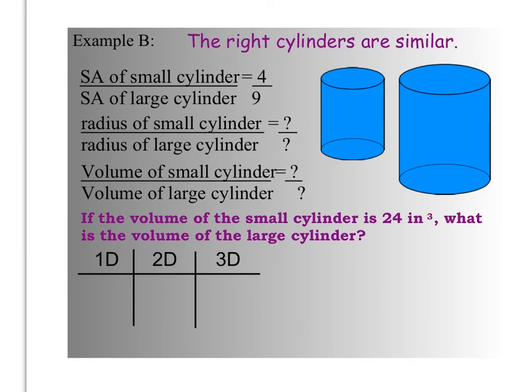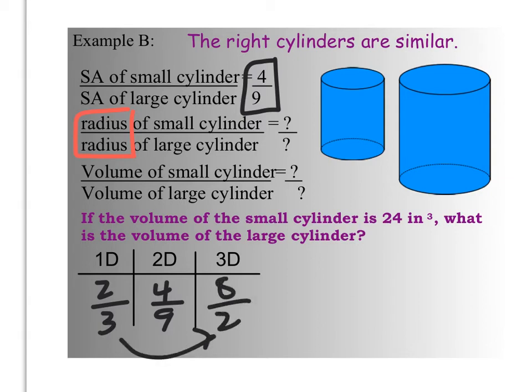All right, another example. Following cylinders are similar. We're given a surface area of 4 ninths. We want to know the radius of the small and the large cylinder, or at least the ratio of the radius. And in this case, we would take that 4 ninths, and we would put it in this two-dimensional space here. That would make the ratio of the radius, or radii, two-thirds. That would make the ratio of the volumes 8 27ths. Okay, now we work our way down here in the problem.